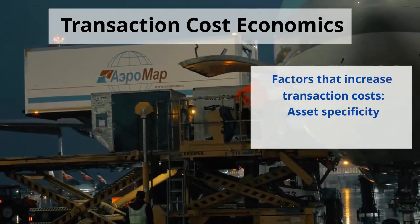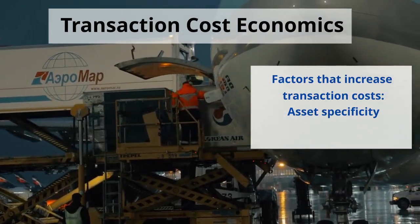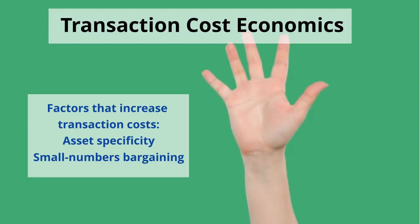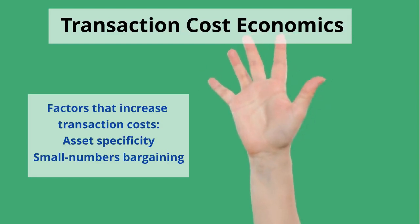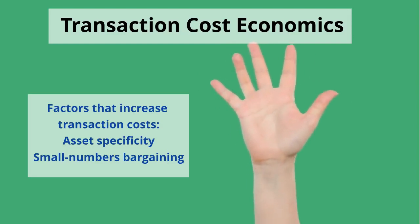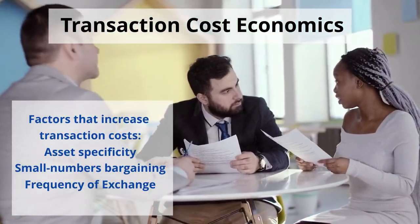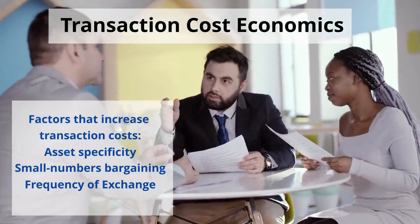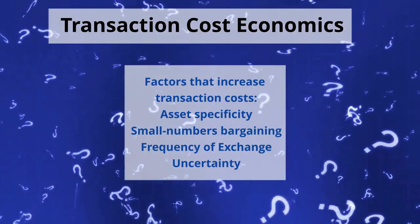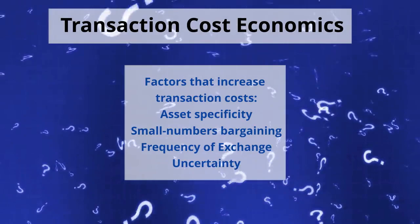One of the things that makes transaction costs higher is asset specificity — this is when you have to invest in assets that are specialized for the exchange. Another factor that increases transaction costs is small numbers bargaining, which is when there's only one or a few potential partners to work with. Transaction costs also tend to be higher when there is high frequency of exchange. Last but not least, transaction costs will also tend to be higher when there's great uncertainty, such as when there's high demand volatility or information asymmetry.